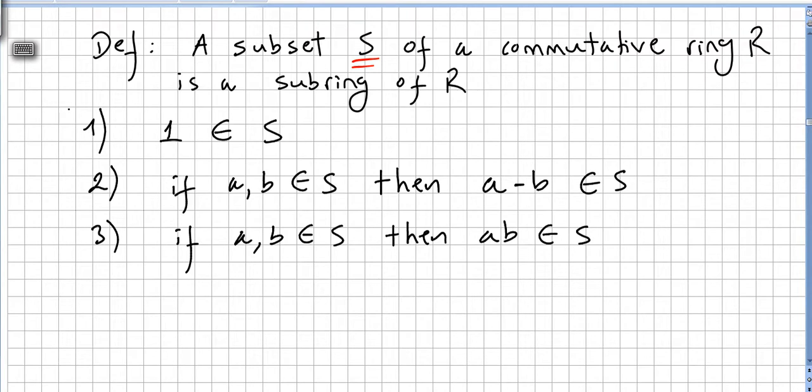If these three things happen, we say that S is a sub-ring of R. So you have a ring R and here you have a sub-ring S.